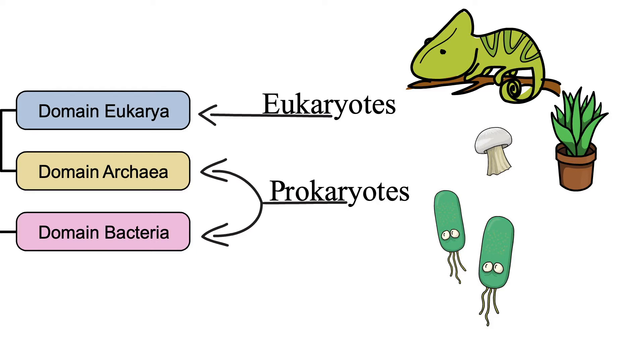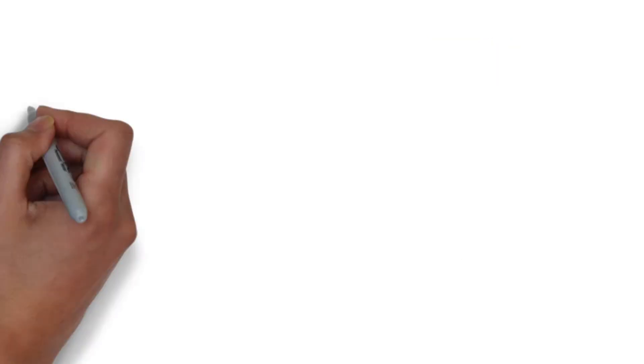All living organisms would be either a prokaryote or a eukaryote. For example, bacteria who cause us infections are prokaryotes, while plants and animals, including us humans, are eukaryotes.